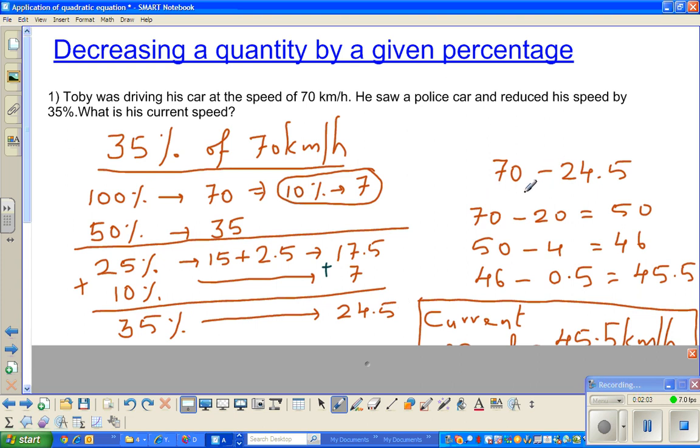Then I've shown you how to take away 70 take away 24.5. That's difficult, so I've done it in steps. First I took away 20. So 70 take away 20 is 50. Then I take away 4, which is 50 take away 4 is 46. And then 46 take away 0.5 is 45.5. You're taking away 20, then 4, then 0.5. So his current speed is 45.5 km/h.